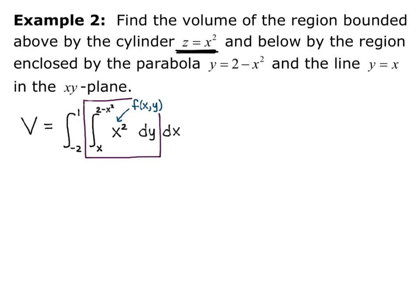Alright, so we work from the inside outward. So first we're going to focus on the integral from x to 2 minus x squared of the function x squared dy. So because I'm integrating with respect to y, I treat x like a constant. And so x squared is just a constant, so it's going to be x squared y from y equals x to y equals 2 minus x squared.